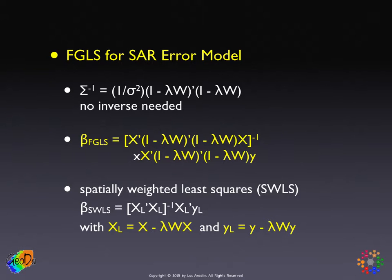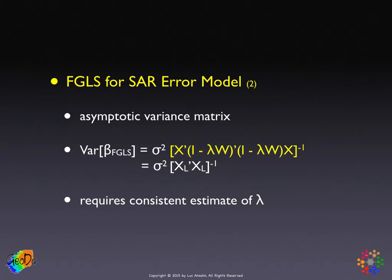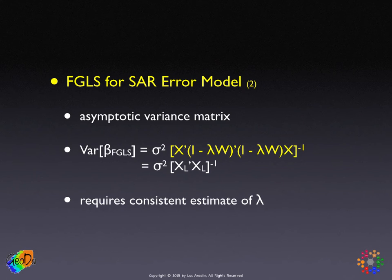We have to get a consistent estimate for lambda, and that's where the GMM principle will come into play. The second step of the FGLS gives the variance: plugging in sigma-inverse, which turns out to be the spatial filter, the variance of the feasible generalized least squares estimator is sigma-squared times spatially filtered X prime, spatially filtered X, with the whole thing inverted. The principle is the same as in the maximum likelihood case. The key difference is how we obtain a consistent estimate for the nuisance parameter lambda, which we will return to next.